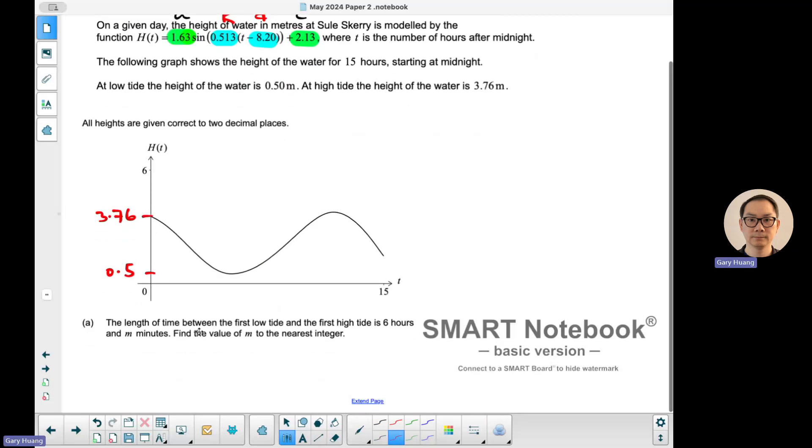Part A asks for the length of time between the first low tide, which is here, and the first high tide, which is there. It's 6 hours and M minutes. Find the value of M to the nearest integer. Since this is a paper 2 and you have an equation of graph, you can graph this using a graphing calculator. Just make sure to change the mode to radians, then sketch it.